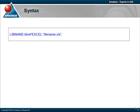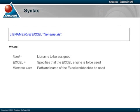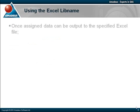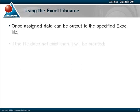The syntax of the Excel LibName is as shown. LibRef is the logical name to be assigned. Excel specifies that the Excel engine is to be used. FileName.xls is the path and name of the Excel file to be accessed. After assigning the Excel LibName, data can be written out to the specified Excel file. If the file does not exist, then it will be created.